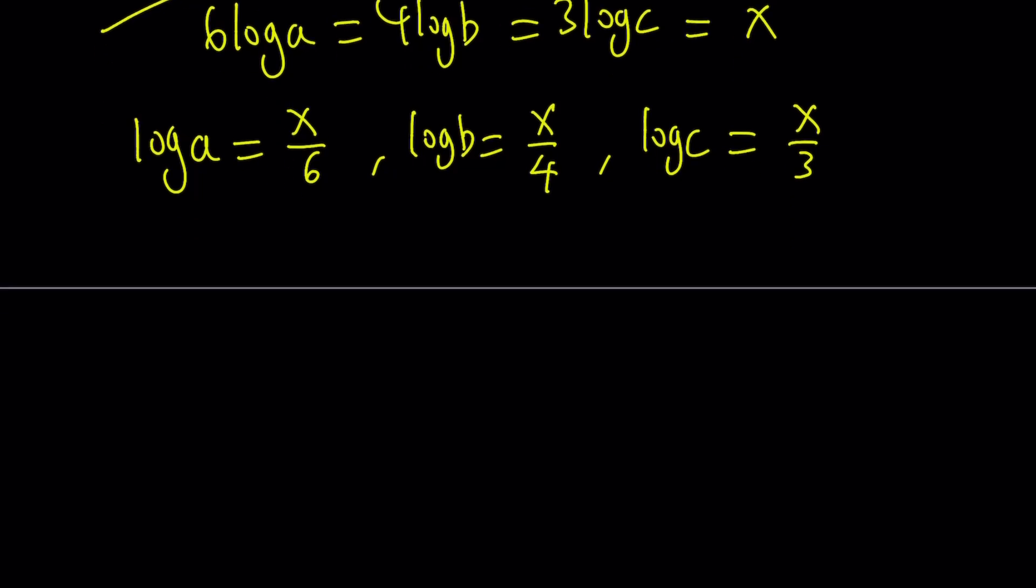And I'm supposed to evaluate log C with base AB. So in order to manipulate this, I don't want AB, I don't want the base to be a product, but rather the argument to be a product. So I'm going to go ahead and invert this.